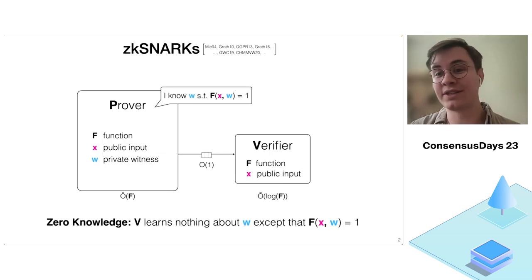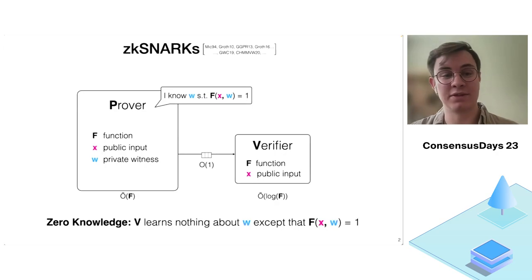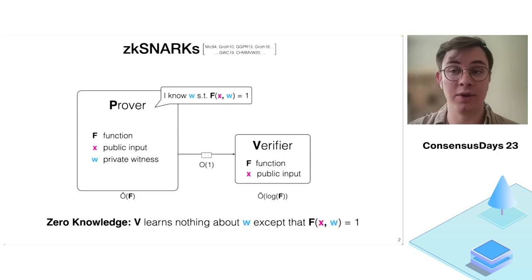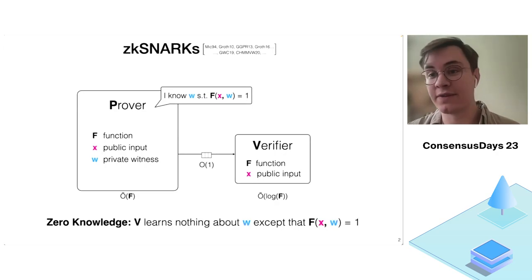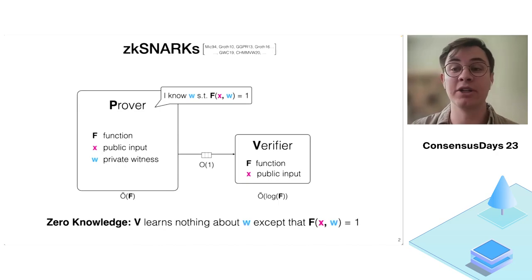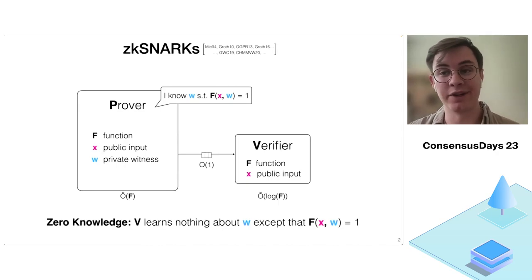For an example, you could think about the public input as being a SHA2 hash. The prover wants to convince the verifier that they know a pre-image to that hash without actually revealing it.